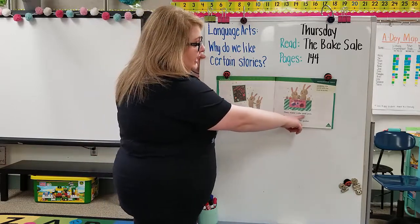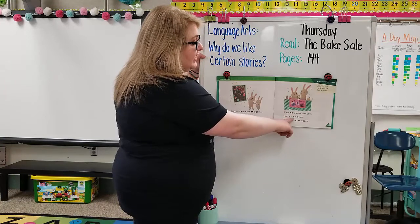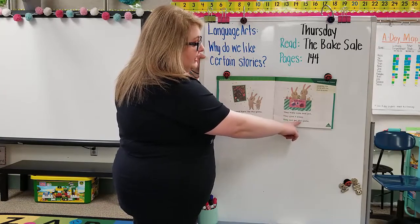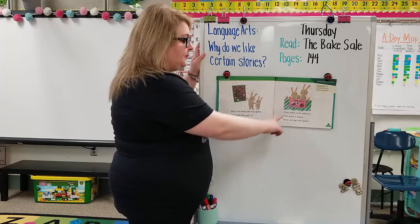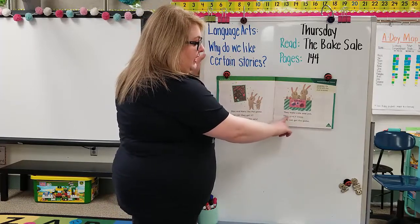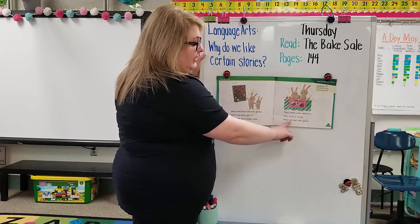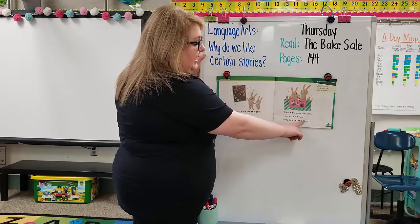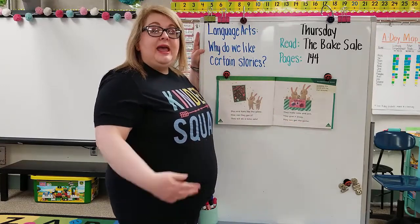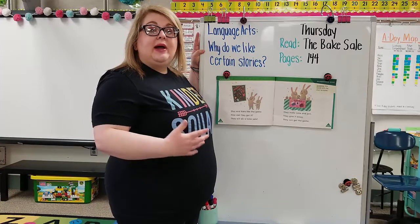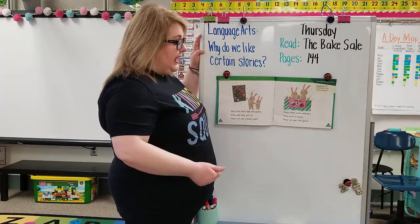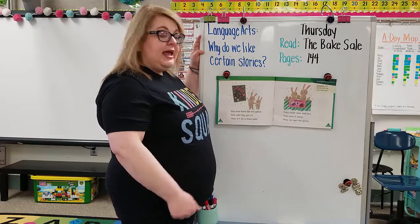They make cake and jam. They give it away. They can get the game. So the problem was they wanted a game, and they needed to do a big sale to earn the money for the game. So they sold cake and jam and earned the money.